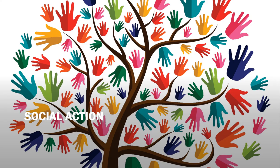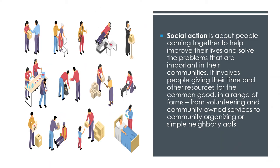The next approach is social action. Social action is about people coming together to help improve their lives and solve the problems that are important in their communities. It involves people giving their time and other resources for the common good in a range of forms, from volunteering and community-owned services to community organizing and simple neighborly acts.